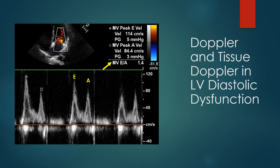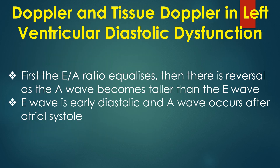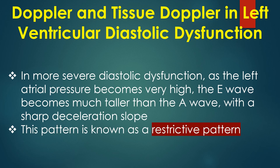When the E/A ratio is used, there could be several grades of LV diastolic dysfunction. First the E/A ratio equalizes, then there is reversal as the A wave becomes taller than the E wave. E wave is early diastolic and A wave occurs after atrial systole. In more severe diastolic dysfunction, as left atrial pressure becomes very high, the E wave becomes much taller than the A wave with a sharp deceleration slope — known as the restrictive pattern.